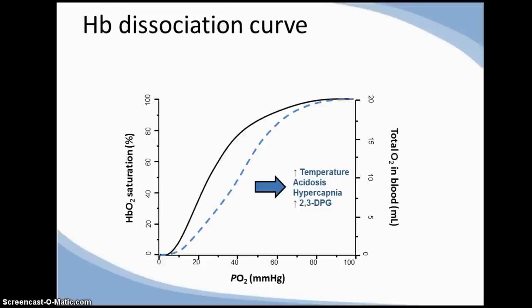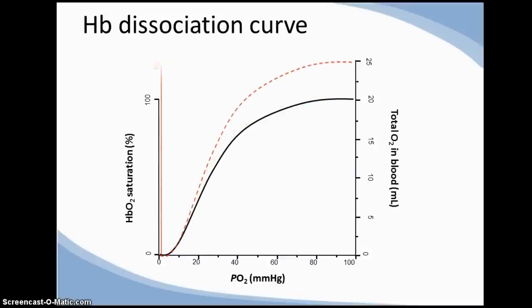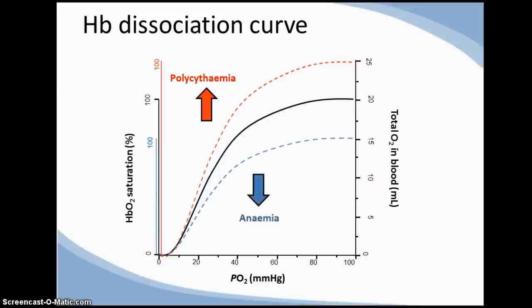The curve can also be shifted to the left in converse circumstances, such as hypothermia, alkalosis, hypocapnia, and low 2,3-DPG. The curve can also be stretched upwards in the presence of polycythemia and downwards in anaemic patients. It's worth noting that in these circumstances, pulse oximetry could still be in the normal range of 95–100%, even if the haematocrit or packed cell volume was dangerously low or high. This could be differentiated by doing a full blood count to check haemoglobin concentration.